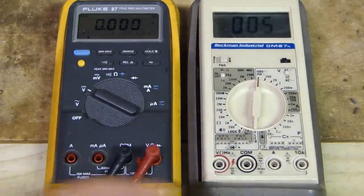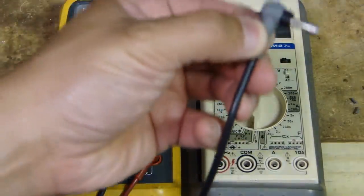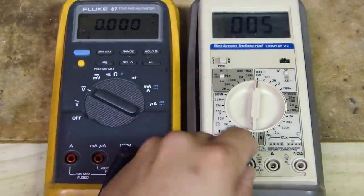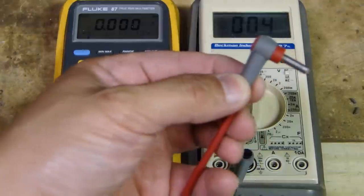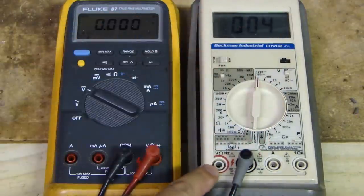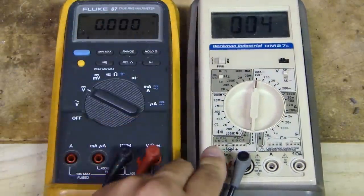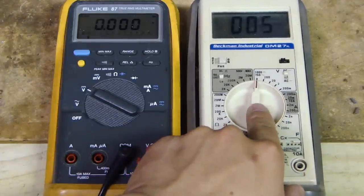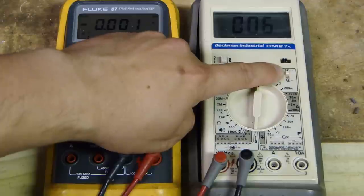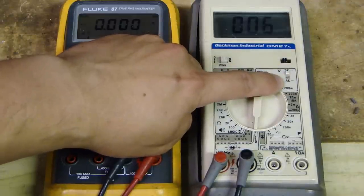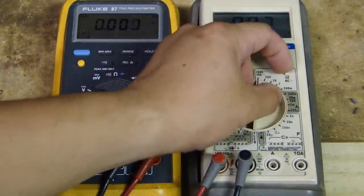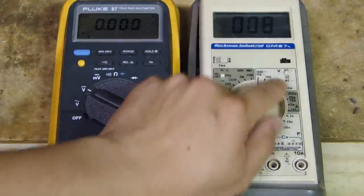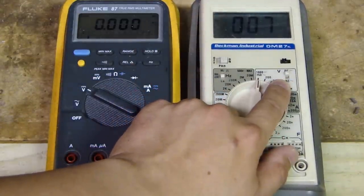And on this one, same thing, take your black probe, plug it into common, COM is your negative, red is your positive, and you see is V, plug it into here. Now, on this multimeter, there's actually a selector switch, DC or AC. So if I was to switch this down to AC, then it's ready to measure AC voltage. Switches back to DC, then it measures DC voltage.